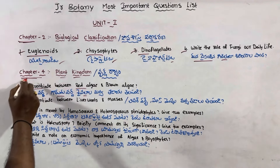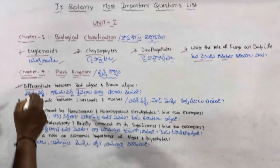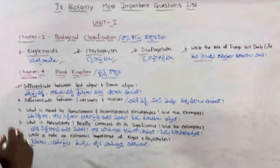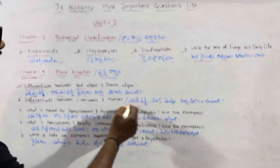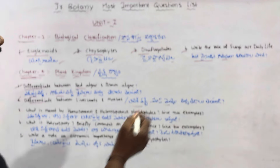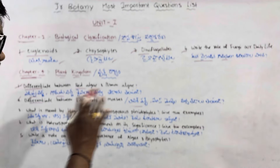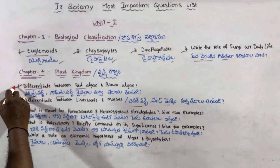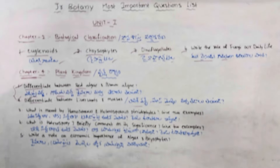That is the first important question from Chapter 4. The second question is the difference between liverworts and mosses. Liverworts and mosses are different from each other, and if you prepare a table format, you can clearly show the differences. It is very important to differentiate between red algae and brown algae as well.